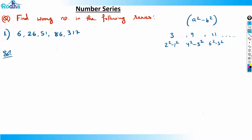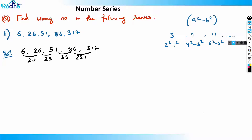If you try to find the pattern by differences directly, you won't be able to. The differences are: 20, 25, 35, and 231 — no clear pattern. We need to understand that something is wrong here. Not every series can be solved by differences alone, so let's set that aside.